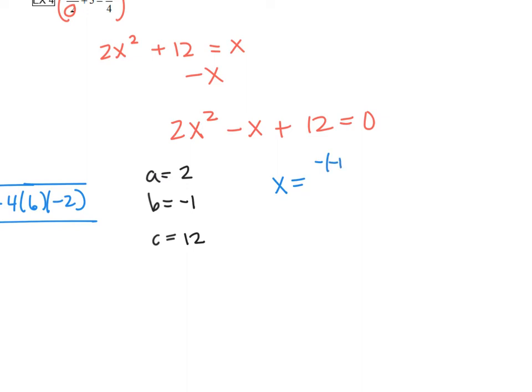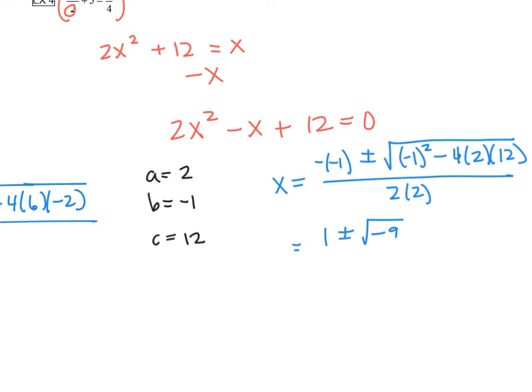And then we just plug in. x equals negative b, so see how I did a negative negative 1, plus or minus the square root. These parentheses are on that negative 1 before we square it, it's very important. Minus 4ac all over 2a. So negative negative 1 is positive 1, plus or minus... Grab your calculator, let's do all that math and see what you get. You should get a negative 95 all over 4.